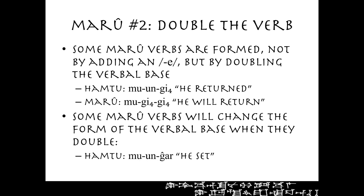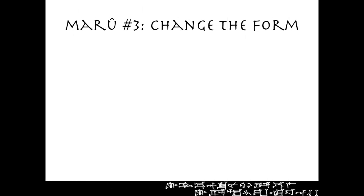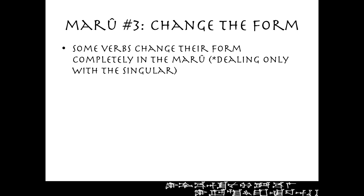Some maru verbs actually change the form of the verbal base when they double. The verb nyar, 'to set' — in the hamtu it's mu-un-nyar, 'he set.' But in the maru it becomes mu-ni-tu-ni-tu. So nyar not only doubles, but it actually changes the form: nyar goes to nyatu. Something to remember is that there is also a form where the hamtu base will double — we call that hamtu reduplication or free reduplication.